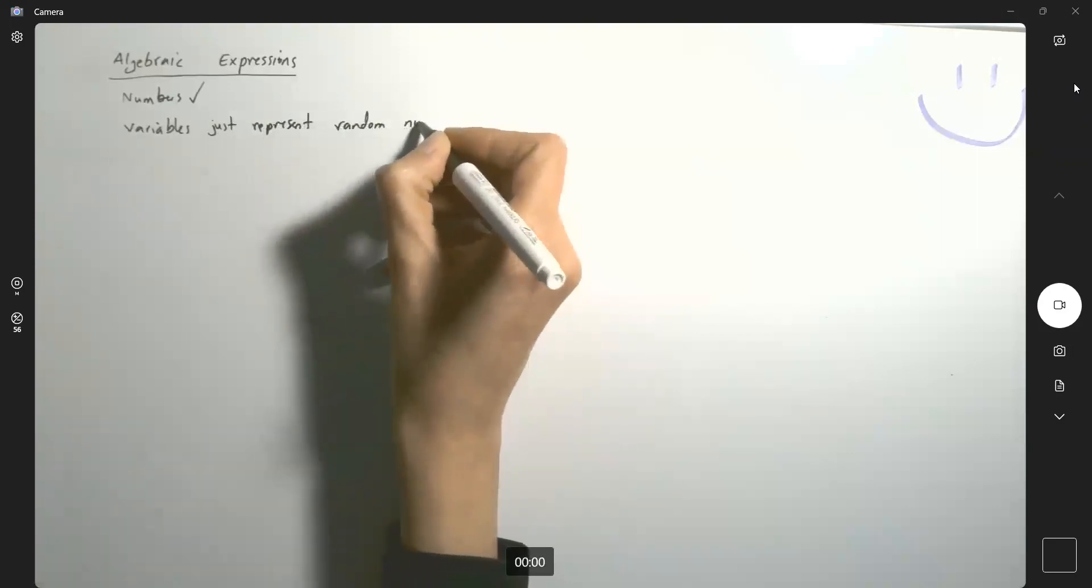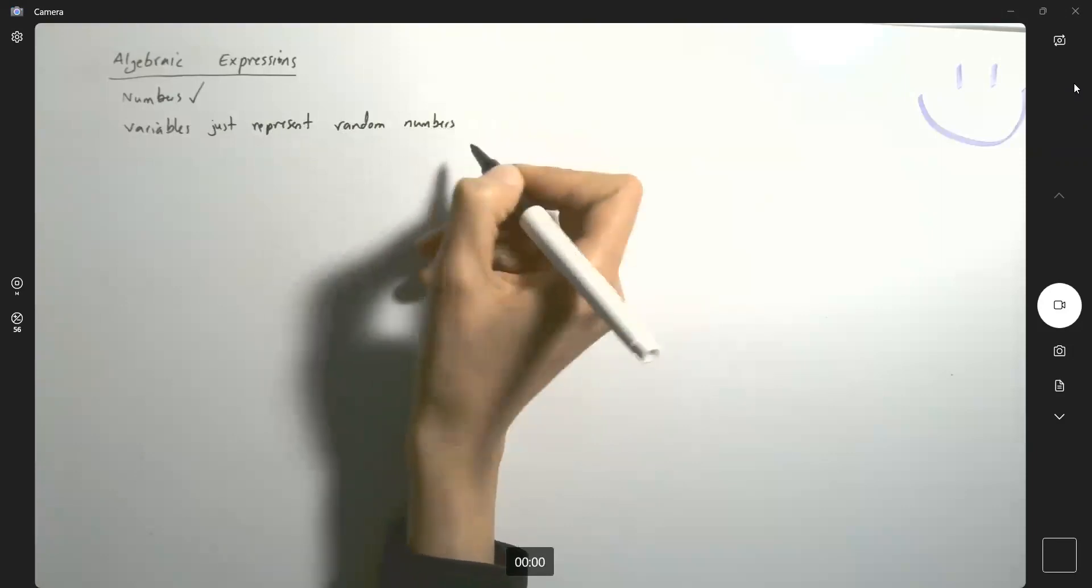We introduced numbers. Now we're going to talk about algebraic expressions. Remember that we are not able to list all numbers. So instead of using numbers, it's easier for us to use variables. Variables just represent random numbers. We don't know what those numbers are. So that's why we use some variables.